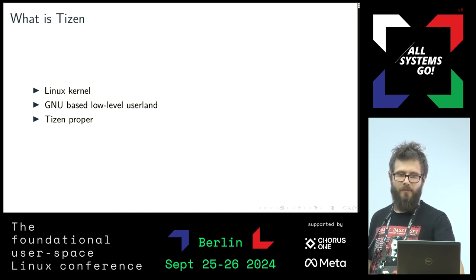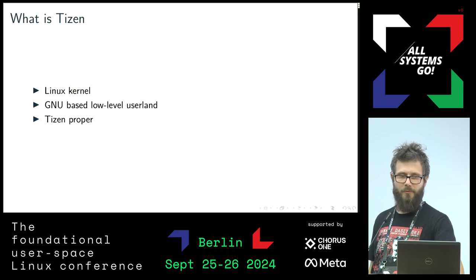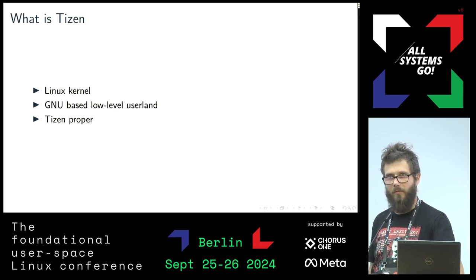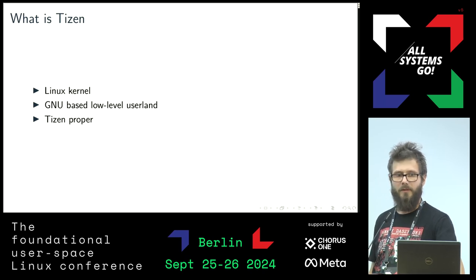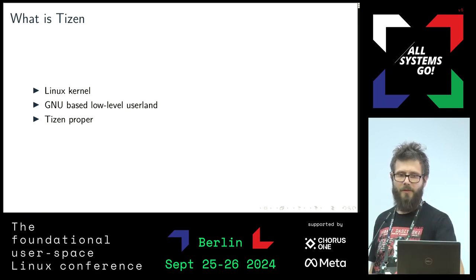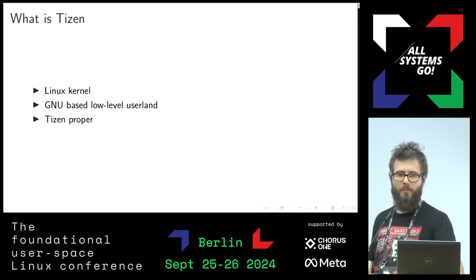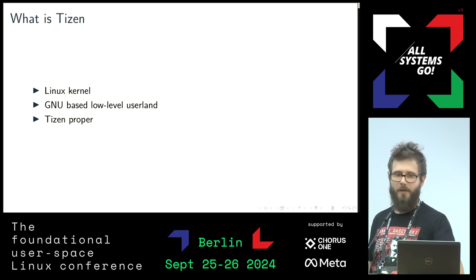Let me begin with a brief introduction of Tizen. It is a GNU Linux distribution designed in cooperation of Samsung and Intel a few years back for smart devices. The system comprises three main software layers: Linux kernel, GNU user land, and Tizen proper, which provides a Wayland-based graphic interface and a number of frameworks for writing applications.